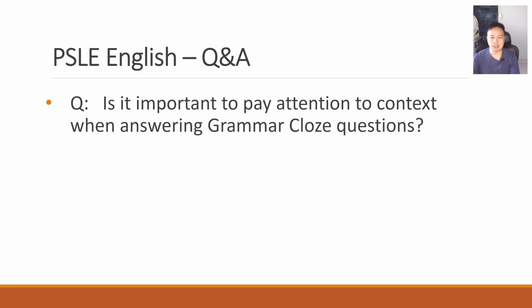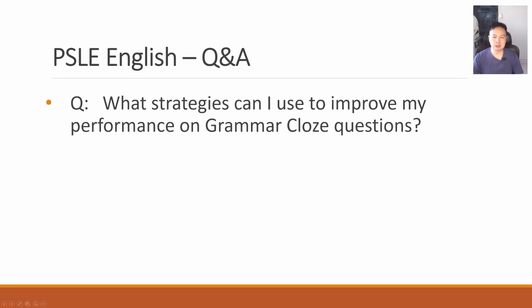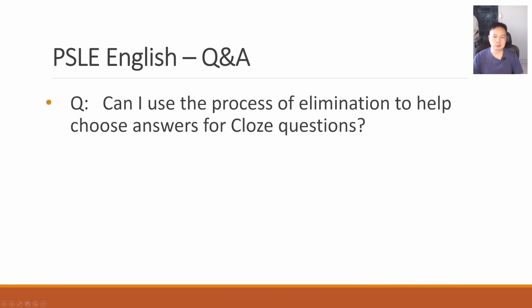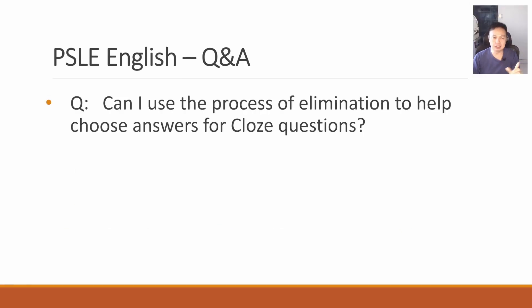Is it important to pay attention to context when answering grammar cloze questions? Yes — context is always important. Always ask yourself what is happening within the grammar cloze and use the context to arrive at the correct answers. You can use elimination and contextual clues. Can I use the process of elimination? Yes, and it's just a small cross or tick — you don't have to spend a lot of time doing elaborate working. Just put a tick or a cross, and you can easily do some simple working for the cloze component.